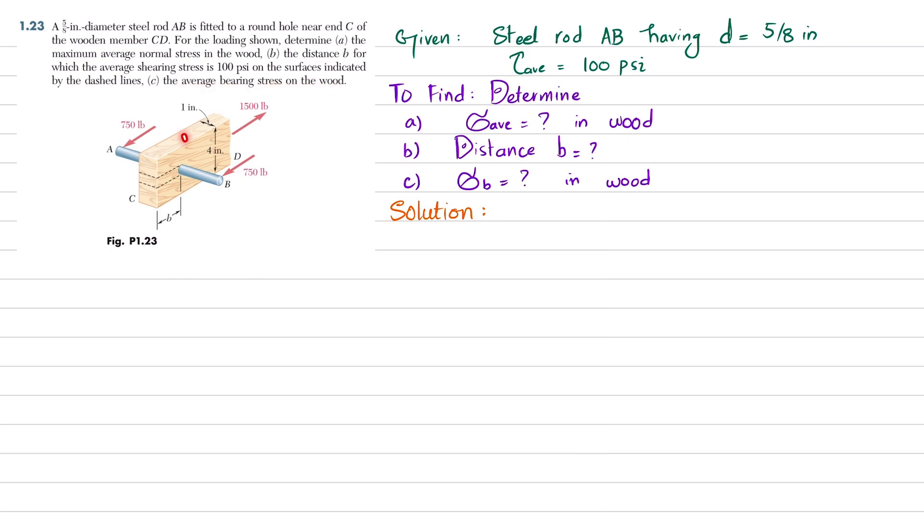From this figure you can see this is the wood and this is rod AB that is made up of steel. The load on this rod is 750 and 750, and here there is a load of 1500 pounds which causes tension in this wooden piece. So what we have to find is the average normal stress in the wood, this distance B for which shearing stress is 100 psi, and bearing stress in the wood. Let's start with the solution.